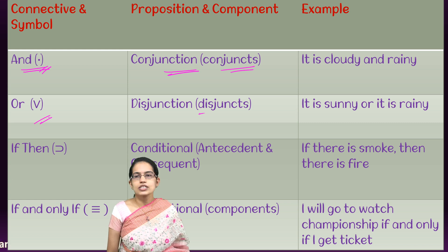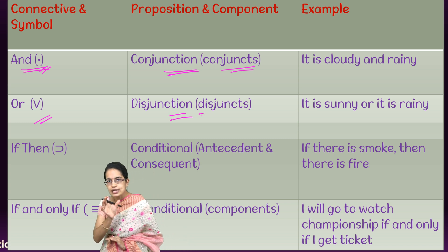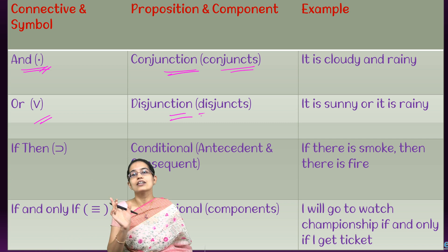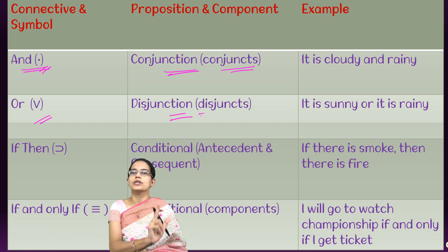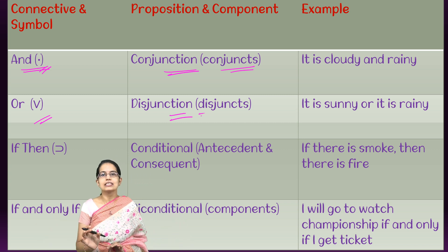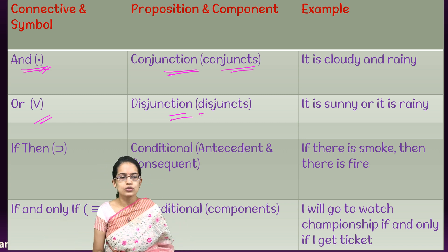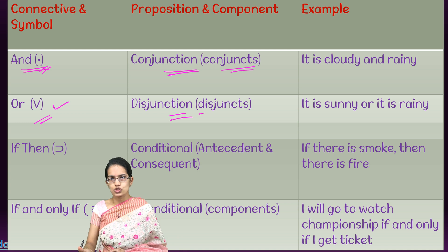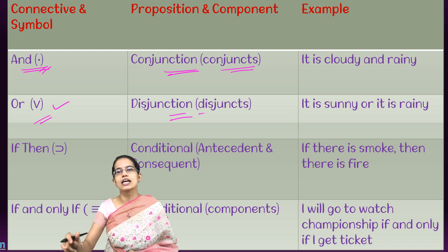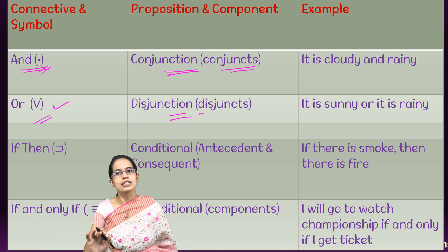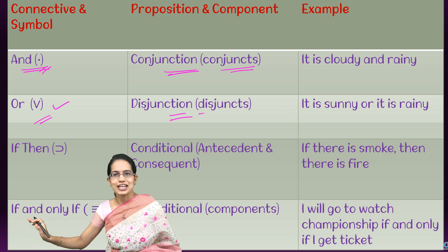The next is 'or,' denoted by a V sign. This is known as disjunction and the individual components are known as disjuncts. This means at least one should be true. When I say 'it is sunny or it is rainy,' at least one proposition should be true. If 'it is sunny' is true, then 'it is sunny or rainy' is a true statement, even if 'it is rainy' is false.